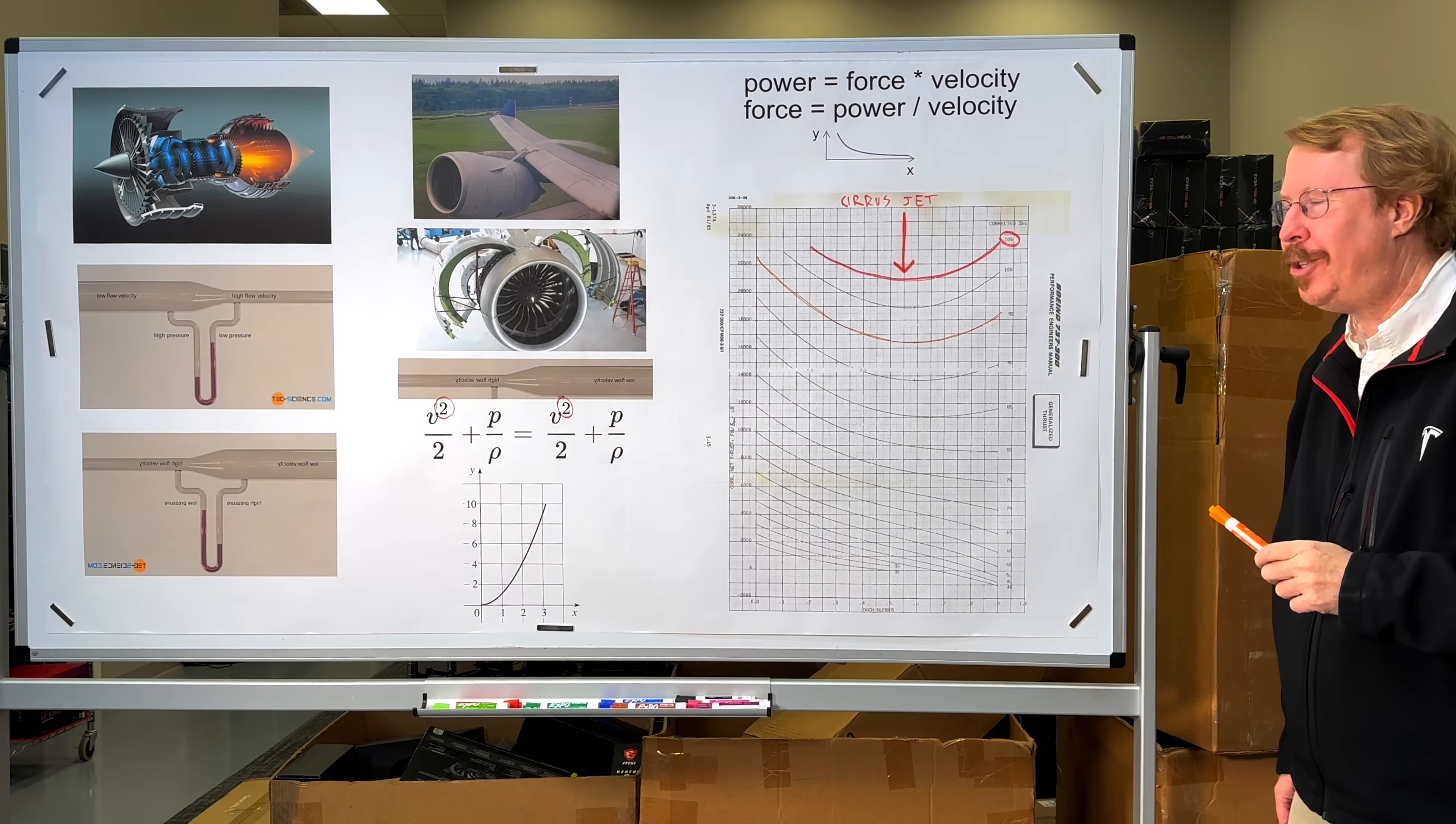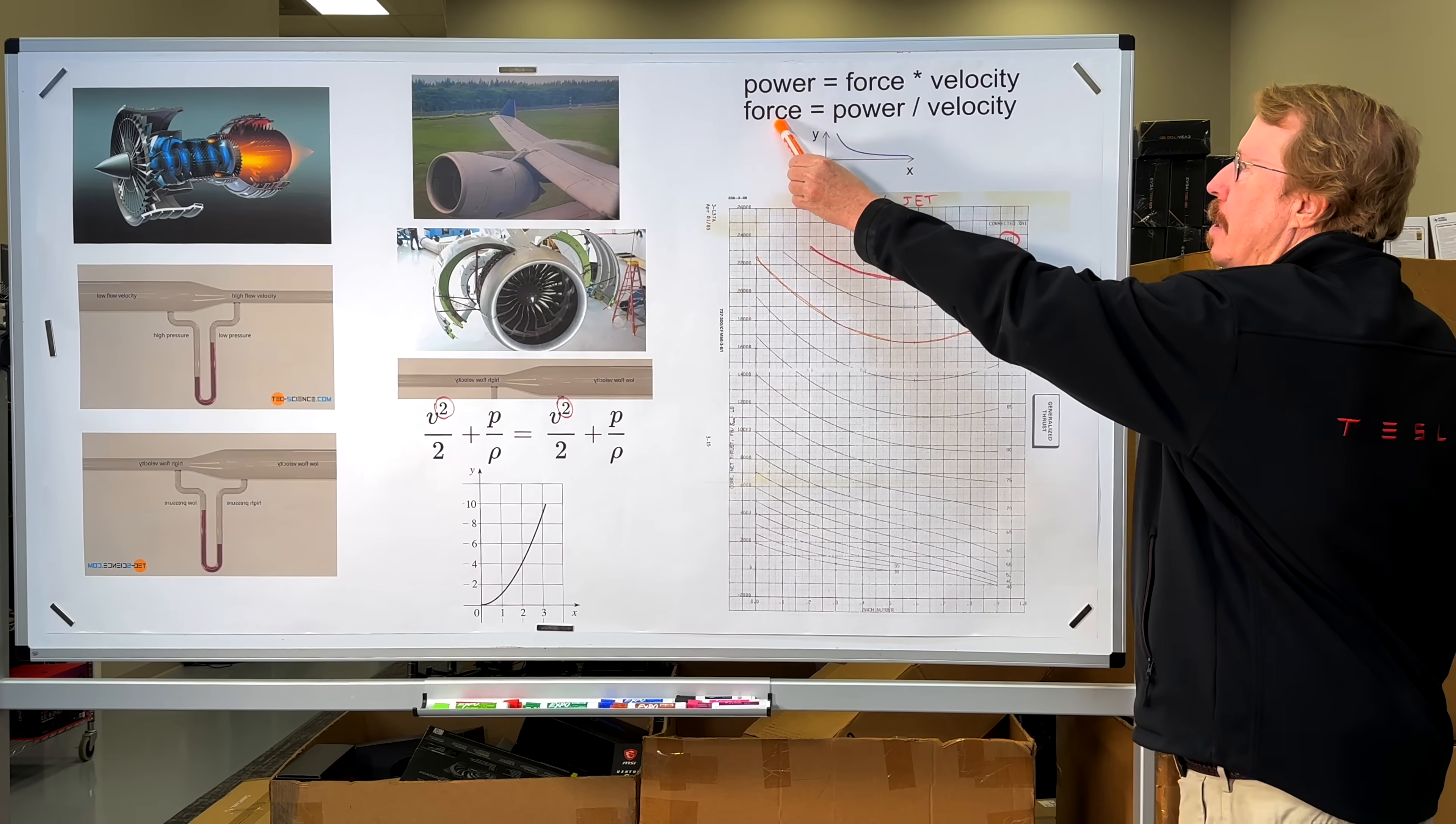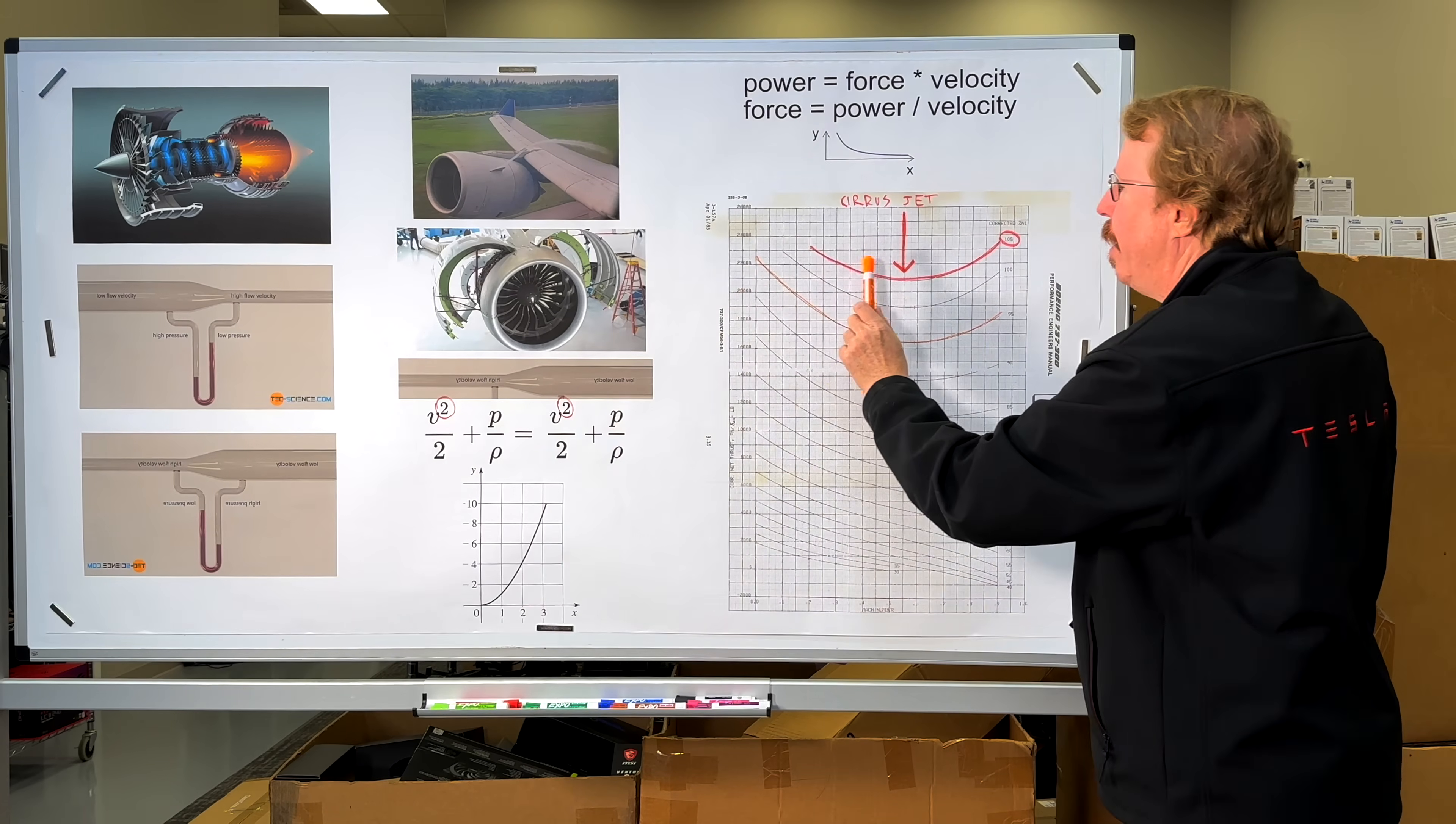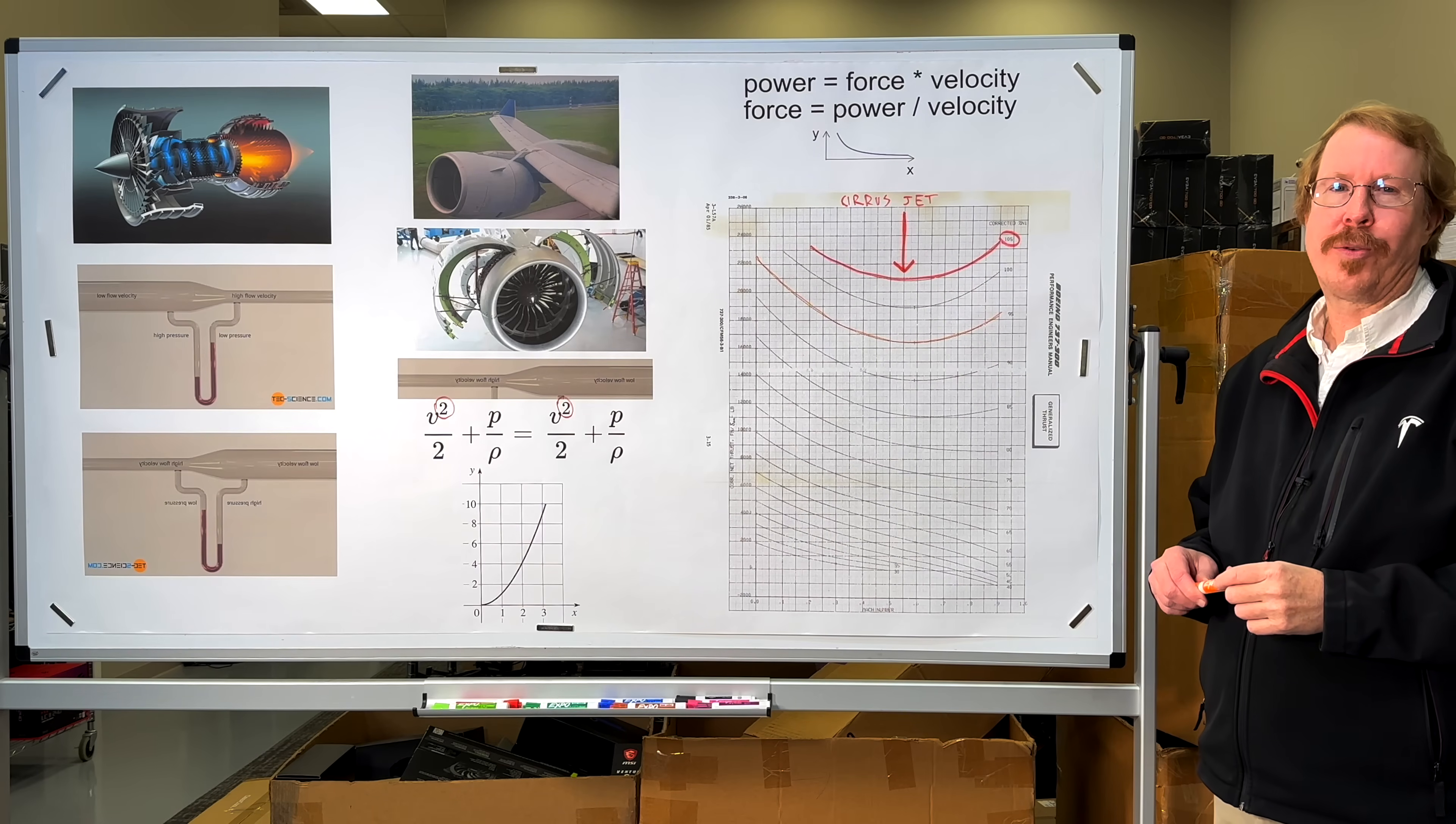And this is why a jet engine can give you all of this speed almost for free. Even though this equation says that the force is going to deteriorate as the velocity builds, this equation, the ram air effect, which you had on top of that, starts pressurizing or turbo charging the engine to build up more thrust.